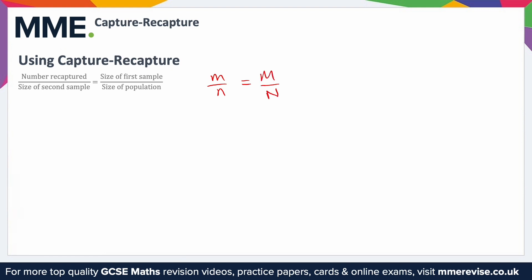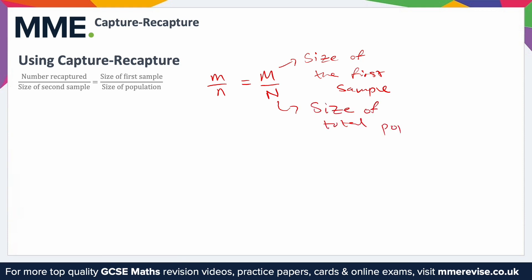Notice how the left-hand side uses lowercase letters and the right-hand side uses uppercase. Capital M would be the size of the first sample, capital N would be the size of the total population, lowercase m would be the number previously tagged, and lowercase n would be the size of the second sample.